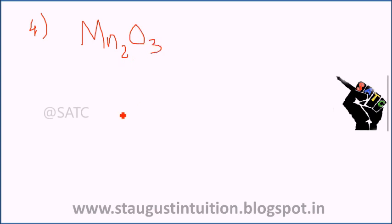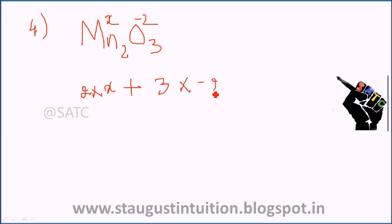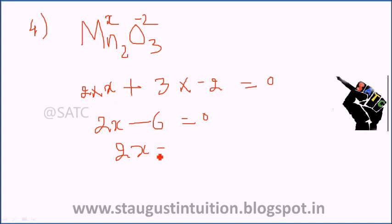Fourth question: Mn2O3. Let Mn = x. x plus 3 × (−2) = 0, so 2x − 6 = 0, therefore x = +3. The oxidation number of Mn in Mn2O3 is +3.